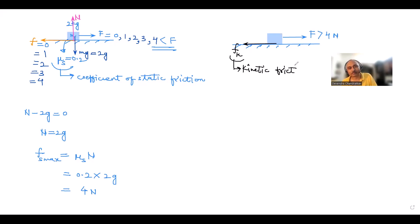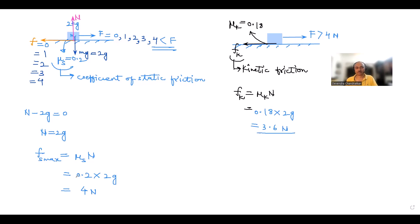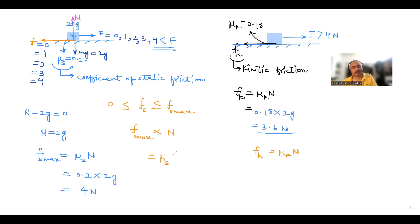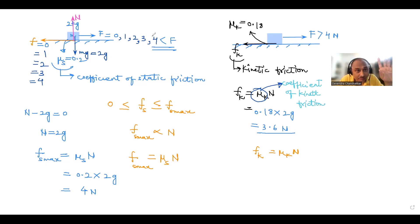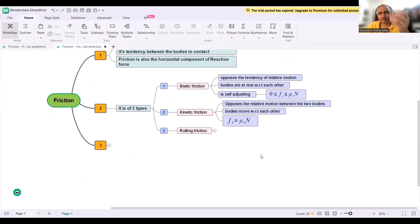Kinetic friction Fk = μk × N. It is not a self-adjusting force — it is constant. Let's say μk = 0.18, so Fk = 0.18 × 2g = 3.6 Newtons. Static friction Fs lies between 0 and Fs_max, and is self-adjusting. Fs_max = μs × N. Kinetic friction Fk = μk × N, where μk is the coefficient of kinetic friction.